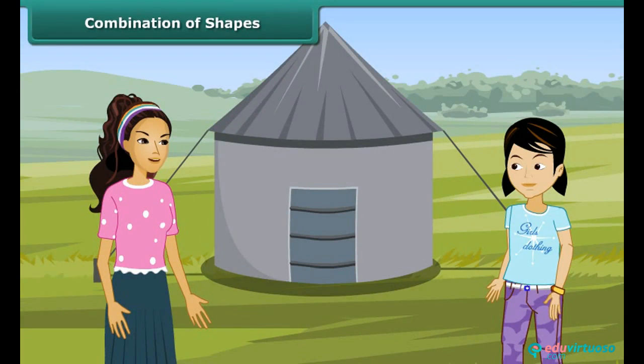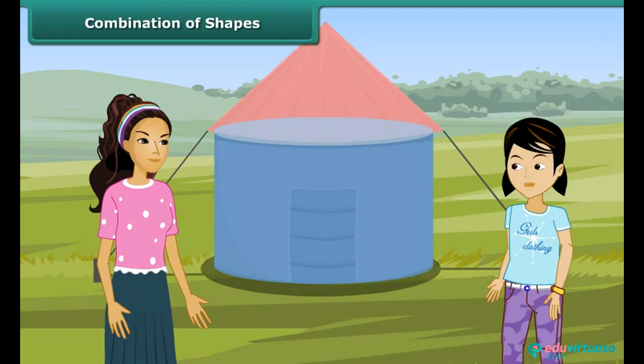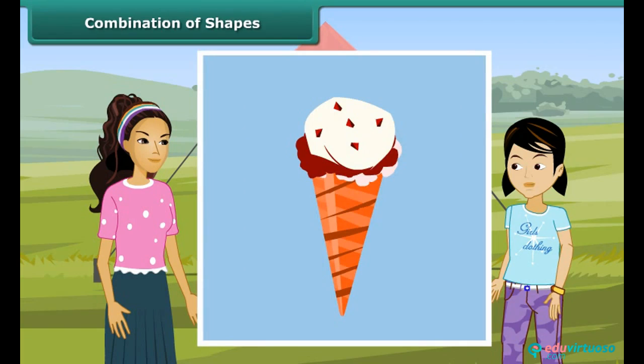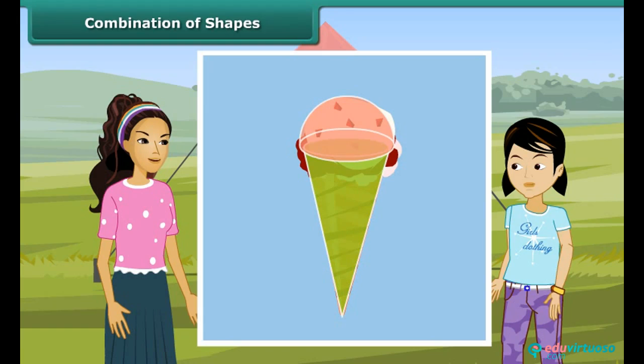Come Rita, look at this tent. This is made up of two shapes. Can you tell the name of the shapes? Yes, I can see the shapes. One is cone and another is cylinder. Correct. Similarly, we have ice cream. We can see that the cone is a cone surmounted by a hemisphere.